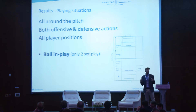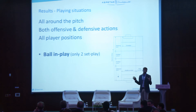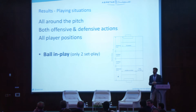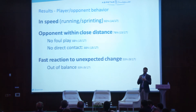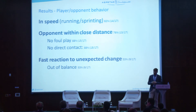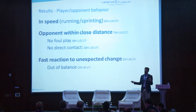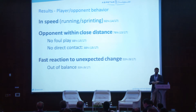Looking at the playing situation — where did these injuries happen? There wasn't really anything particular. It was all around the pitch: offensive and defensive actions, goalkeepers, midfielders, strikers. Only two of these injuries happened during set play, so usually these injuries happen during open play. Often the players who get injured are in speed — doing some form of action while running or sprinting. They often have an opponent within close range, so they have to react to the situation. Importantly, there was no foul play and no direct contact in any of these injuries, so rule changes are probably not the answer.